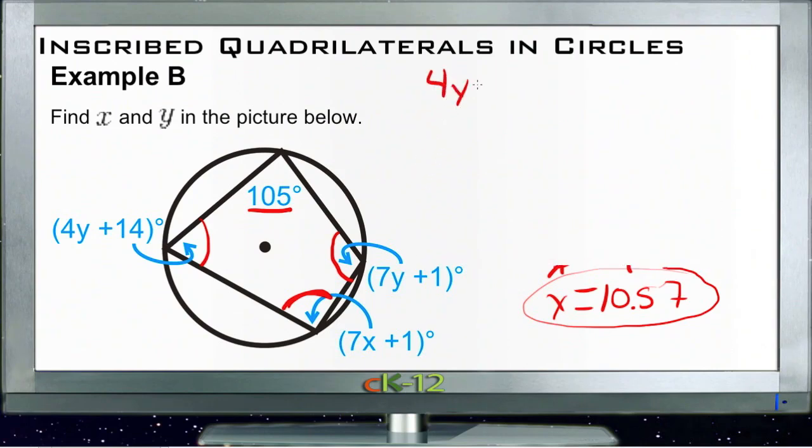So we have 4y plus 14 plus 7y plus 1 equals 180. We'll combine our y's. So we have 4y and 7y. That's 11y. And 14 plus 1 is 15.